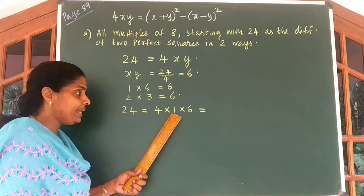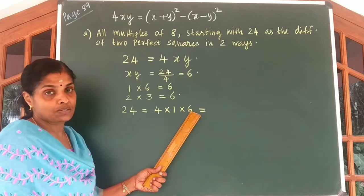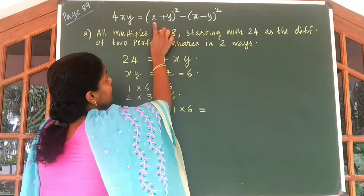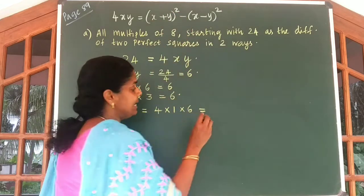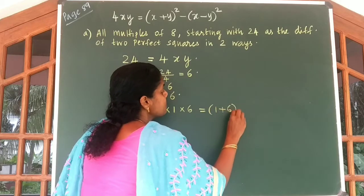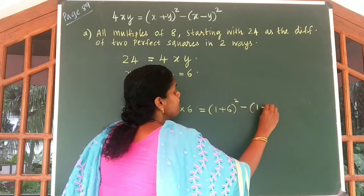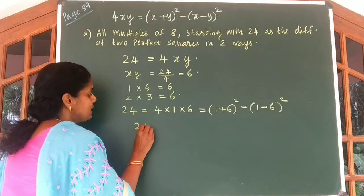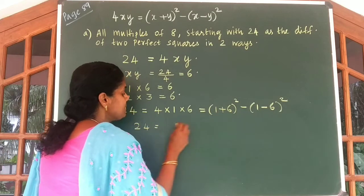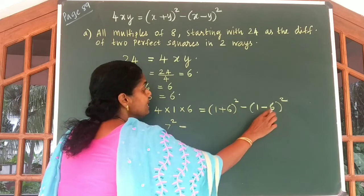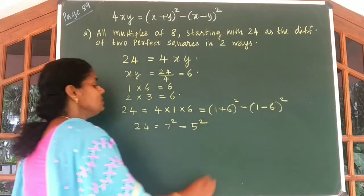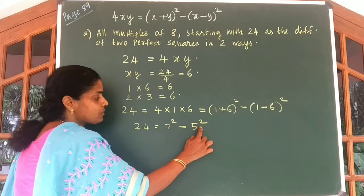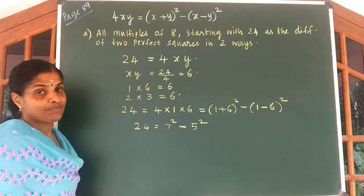For us, x value is 1 and y value is 6. So you get 4 into 1 into 6 is equal to 1 plus 6 whole square minus 1 minus 6 whole square. That is, 24 is equal to 7 square minus 5 square. So 24 can be written as the difference of 2 perfect squares: 7 square minus 5 square.